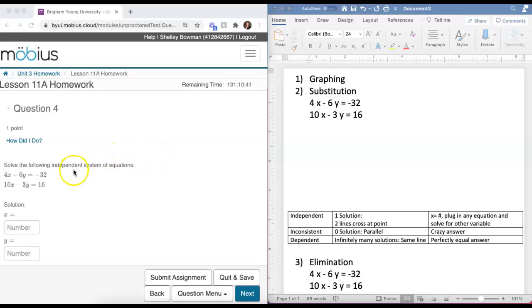The first thing they've told us is that it is an independent system, so I know that I will get an answer. They are not parallel, and they are not the same equation. Because it's independent, I have two lines that will cross at one point exactly.